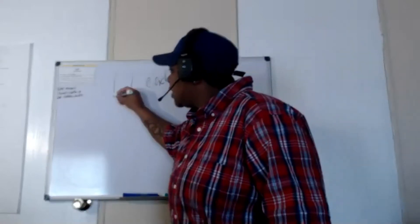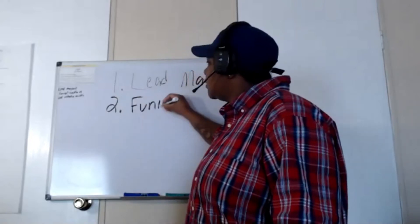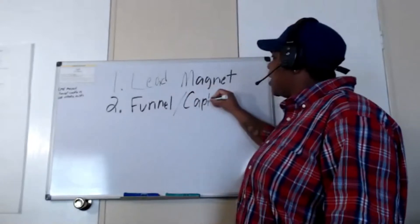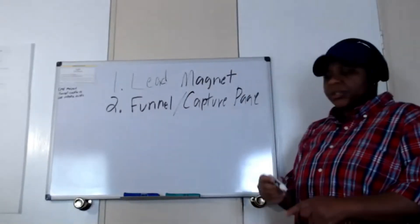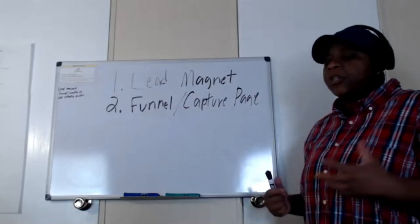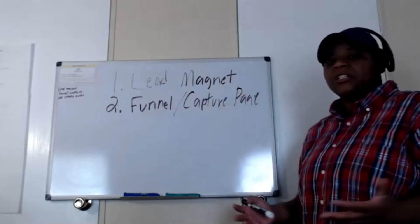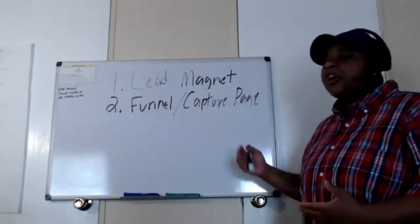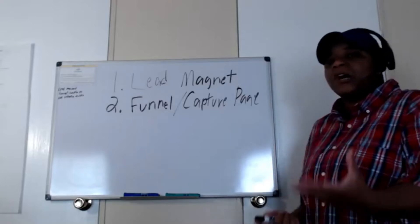Number two, what you're going to need is a funnel and capture page. What this is going to do is allow you to collect that name and email address. So when you give a person your lead magnet, they're going to opt in — they're going to put their name and email address — so that way you have that information. This is how you're building your list. If you don't have that information, you can't follow up with people to service them further and possibly sell them something down the road.